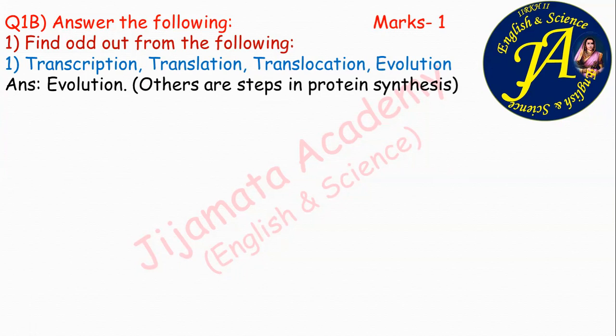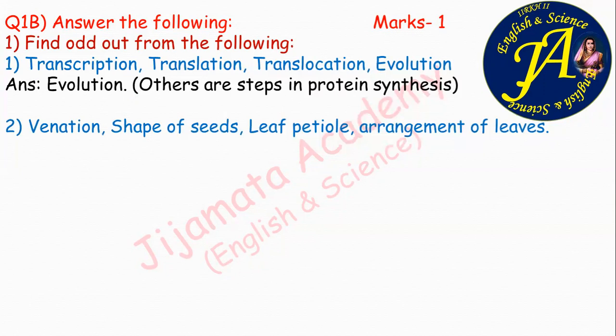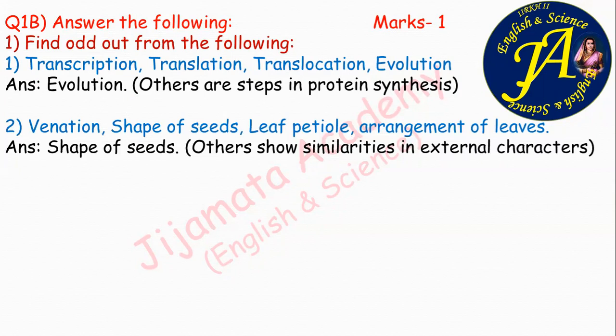The next question involves: venation, shape of seeds, leaf petiole, arrangement of leaves. The correct answer is shape of seeds, because venation, leaf petiole, and arrangement of leaves show similarities in their external characters, that is morphological characters.